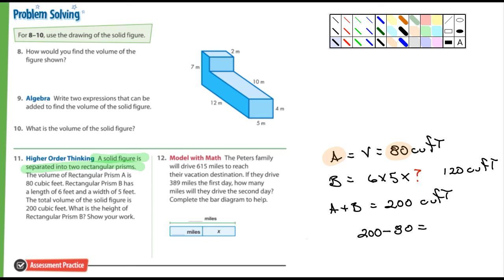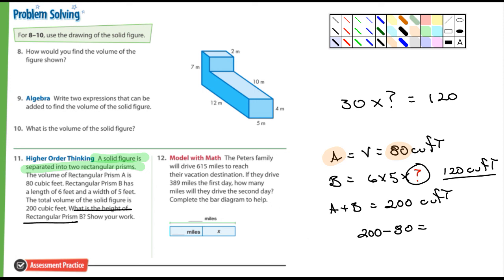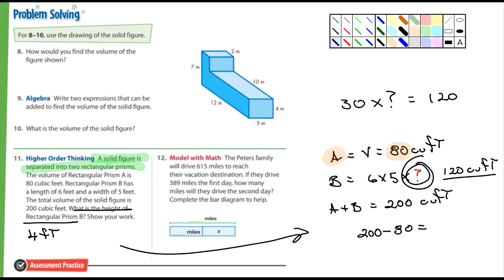Now that we know the volume of B is 120 cubic feet, and 6 times 5 is 30, we need to find what times 30 equals 120 — and the answer is 4. So the height of rectangular prism B is 4 feet. Show your work just like we did here. Number 11 was complicated — I don't know if any of you were able to figure it out, but there you go. Number 13 you can do on your own.